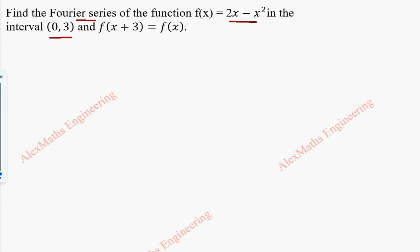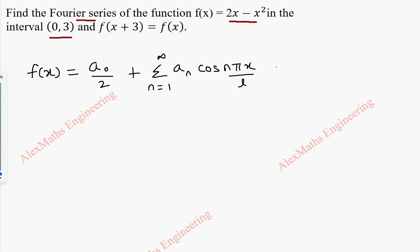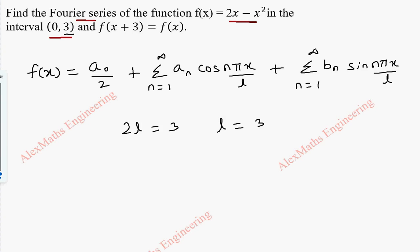As a first part, we are going to write the Fourier series formula, which is f of x equal to a0 by 2 plus sigma n equal to 1 to infinity, an cos(nπx/l) plus summation n equal to 1 to infinity, bn sin(nπx/l). Here, 2l equals 3, so l is 3 by 2.